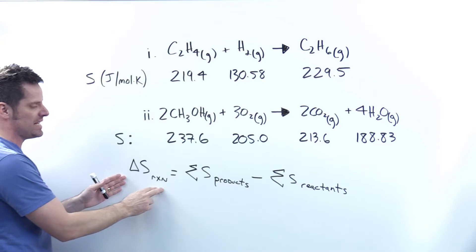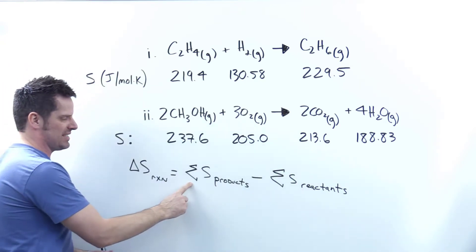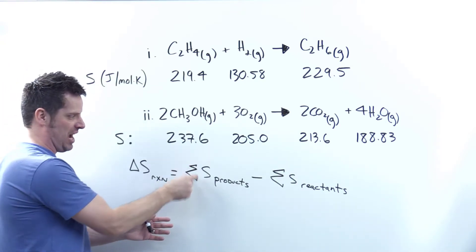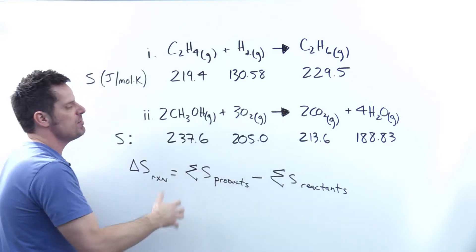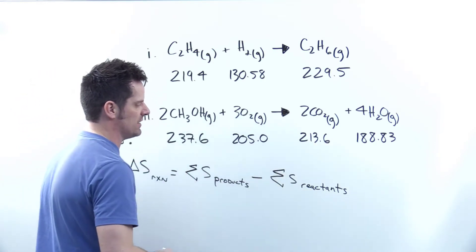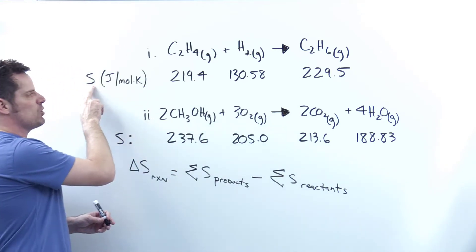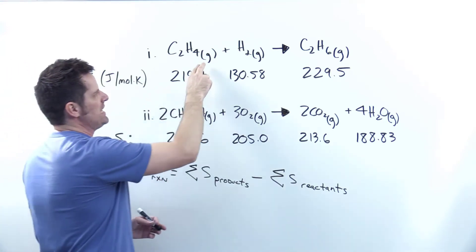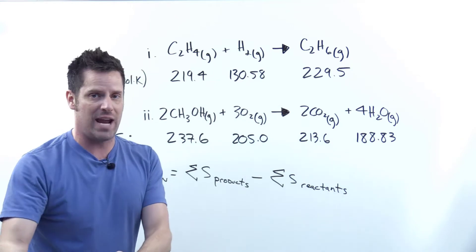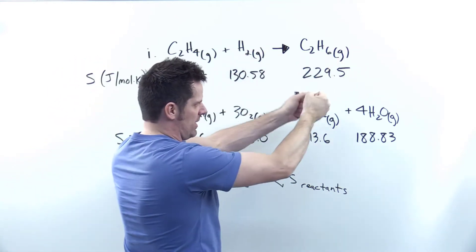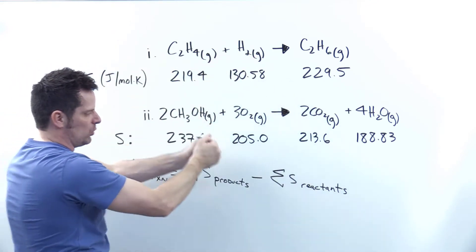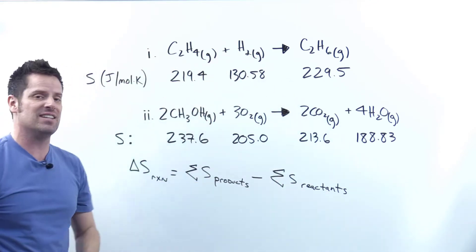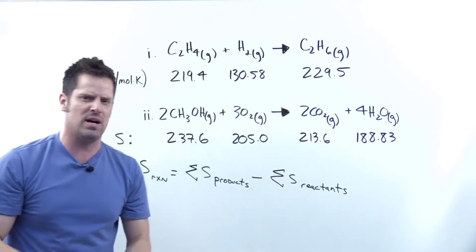Delta S for the reaction is equal to the sum—that's what this epsilon sign means—the sum of all of the total combined S for all the products, minus the same thing of the reactants. I'm going to look up the individual S values for each substance in my chemical reaction, add up all the products, put them in this equation, and then subtract the sum of all the reactants. Whatever the answer is, that's the delta S for that reaction process.